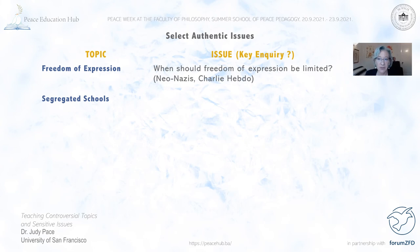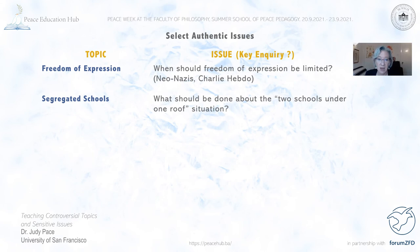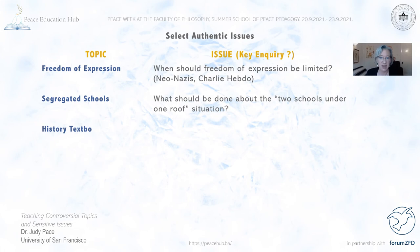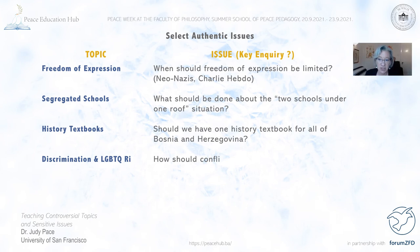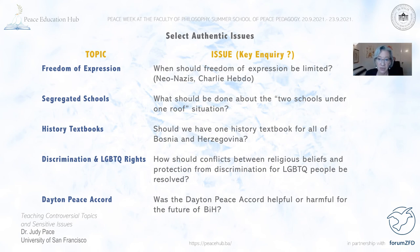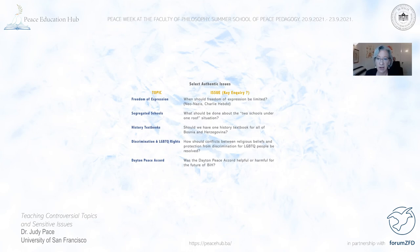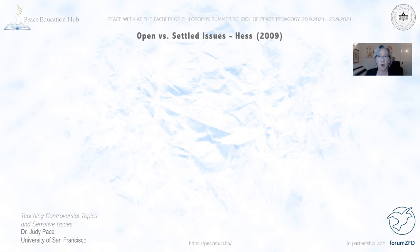Likewise, segregated schools is a topic, but 'What should be done about the two schools under one roof situation?' is a question students could deliberate in the classroom. Borrowing from a local context: Should we have one history textbook for all of Bosnia and Herzegovina? How should conflicts between religious beliefs and protection from discrimination be resolved? Was the Dayton Peace Accord helpful or harmful for the future of Bosnia and Herzegovina? These are all complex questions students could deliberate from multiple valid points of view. We don't want students deliberating about conspiracy theories — we want them deliberating around open issues that have valid disagreements.